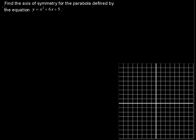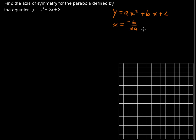Find the axis of symmetry for the parabola defined by the equation y equals x squared plus 6x plus 5. Just a quick review: if we have an equation for a parabola in the form y equals ax squared plus bx plus c, then the equation x equals negative b over 2a is that axis of symmetry.